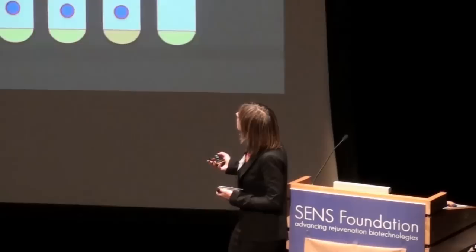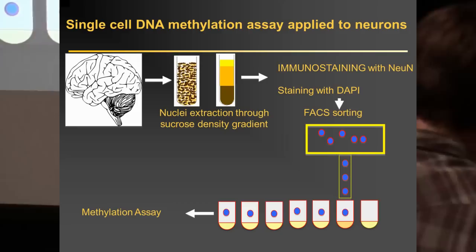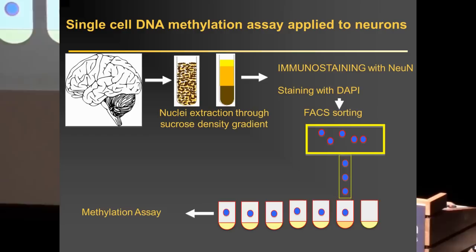We then switched to what we were most interested in: the brain. There is a complication because it's very difficult to isolate single neurons. The strategy we adopted was to isolate nuclei through a sucrose density gradient, then target the nuclei with an antibody specific for neuronal nuclei, and perform FACS sorting. We can sort single nuclei into tubes and then perform our methylation assays.